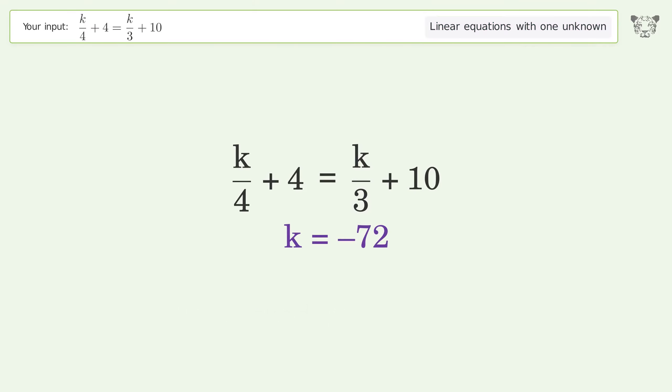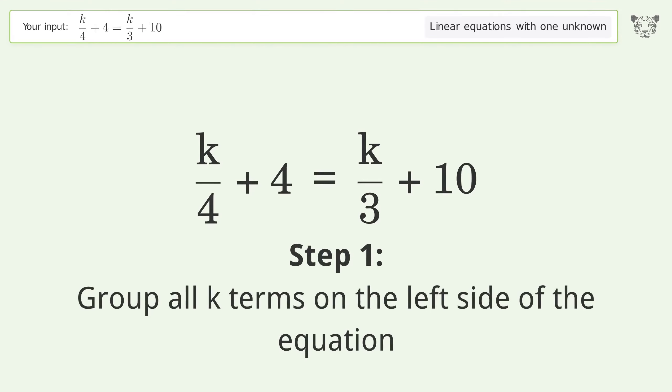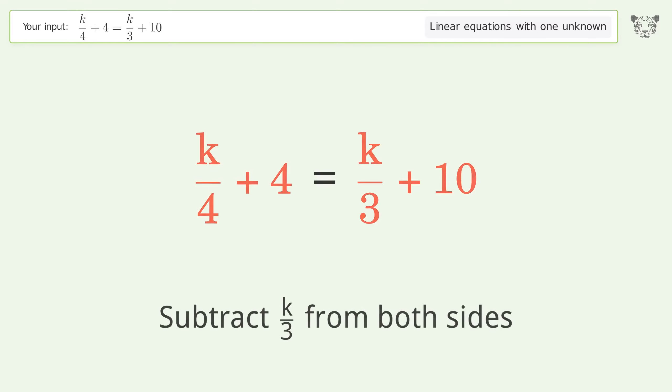You asked Tiger to solve this. This deals with linear equations with one unknown. The final result is k equals negative 72. Let's solve it step by step. Group all k terms on the left side of the equation.